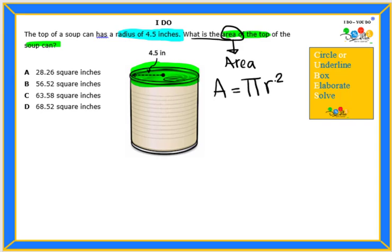So in this formula we are needing the r which is the radius. Let's look in the problem. Did they give us the radius? Yes they did. They gave us the radius is 4.5. So we're ready to substitute in the information.